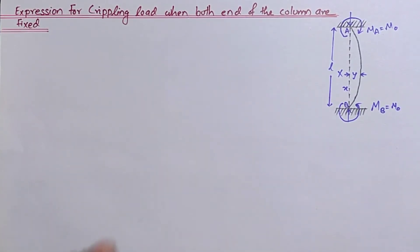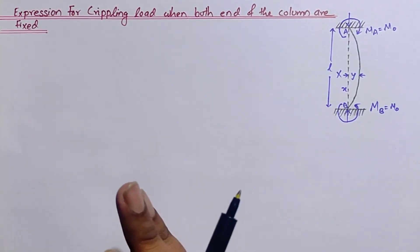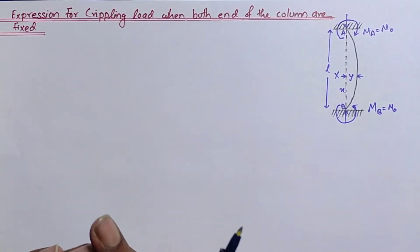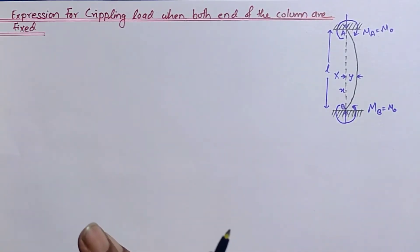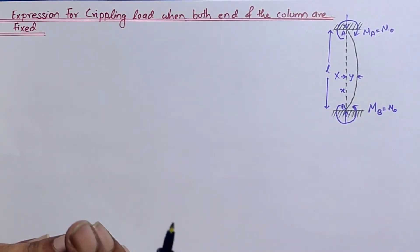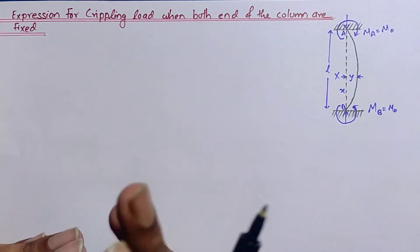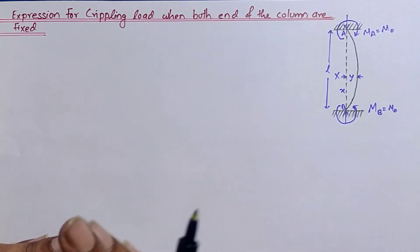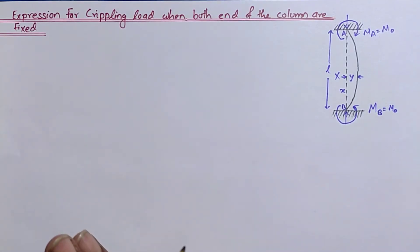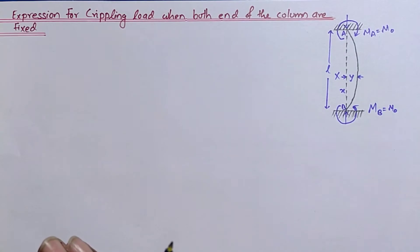Hey guys, welcome back to CV Learning Online. Today I am going to derive an expression for the crippling load when both ends of the column are fixed. In the previous video I discussed how to derive expressions for the crippling load when both ends are hinged, when one end is fixed and the other is free, and when both ends are fixed. I hope you watched my previous video — if not, the link is in the description. Without further delay, let's get started.